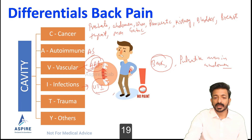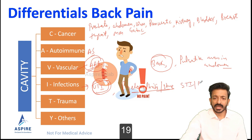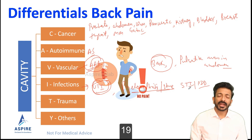For infections, UTI can present with back pain, especially if there is a stone that has led to pyelonephritis. STIs and PID can also give back pain — PID typically causes right or left iliac fossa pain in females but can also give some back pain.